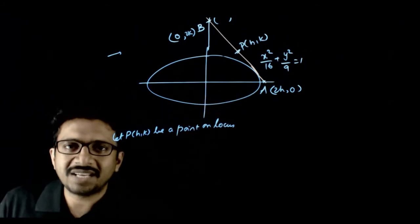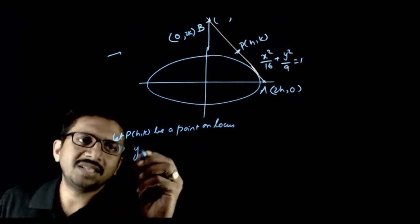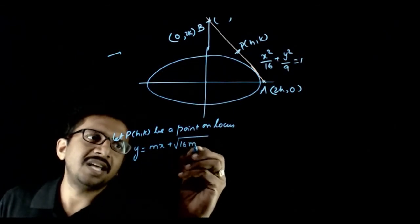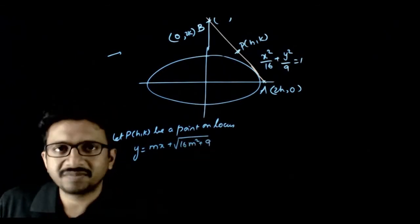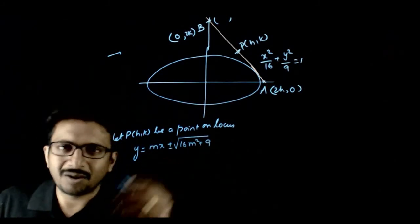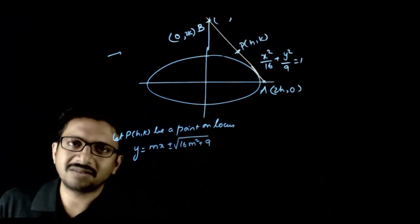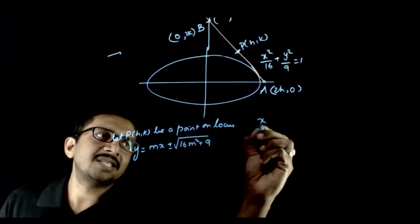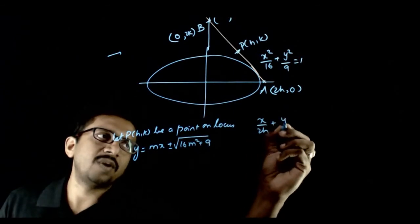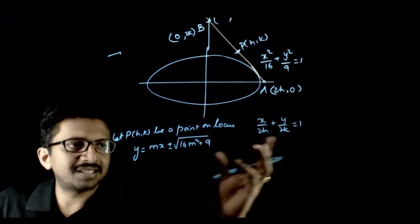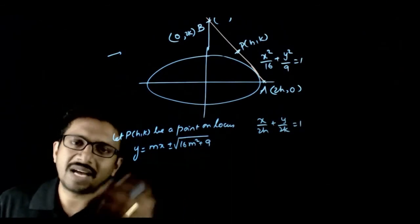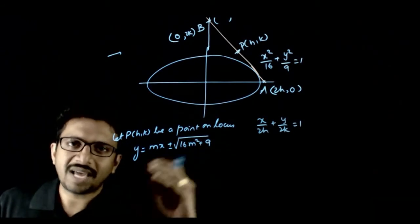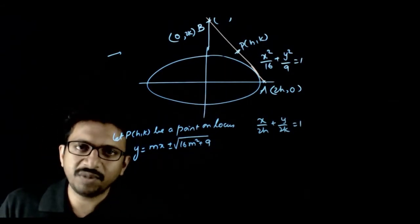The general equation of tangent to this ellipse is y = mx ± √(16m² + 9). Now, the equation of the line AB in intercept form is x / (2h) + y / (2k) = 1. These two lines have to be the same, so the coefficients have to be proportional.